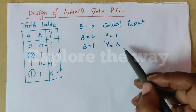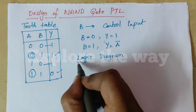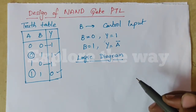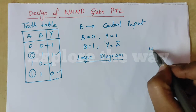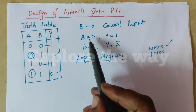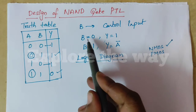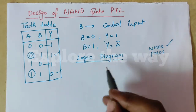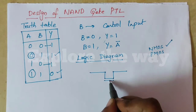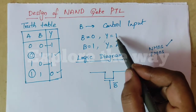We have two equations to implement. Let us draw the logic diagram. Any logic circuit can be designed using either NMOS or PMOS transistors. In this design, I am using NMOS transistors. When B equals 0, Y equals 1 — that is the first equation. B equals 0 can be written as B bar.